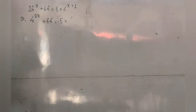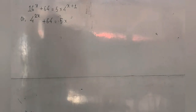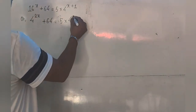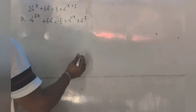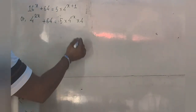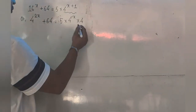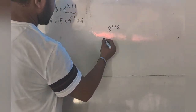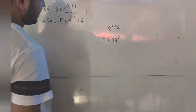We have 5 into 4 with the power x plus 1. By the rule of indices, 4 with the power x plus 1 can be written as 4 with the power x into 4 with the power 1. So if you have 3 with the power x plus 2, then you can write 3 with the power x into 3 squared. You can write it in this way.